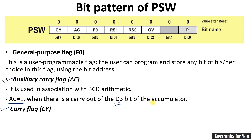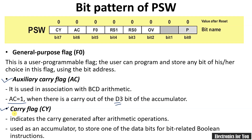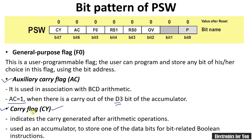The next flag is the Carry flag (CY), which is very important. Whenever a carry is generated from the D7 bit, this carry flag is set. It generally indicates the result of an arithmetic operation. The carry flag can also be operated bitwise, so it can be used just like an accumulator for bit-level arithmetic operations. These are the different flags used in the PSW register.